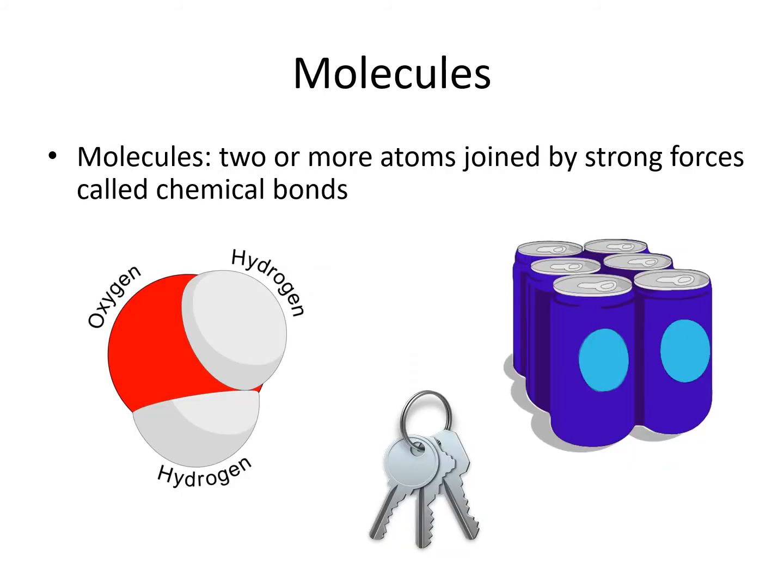Atoms can combine together to make molecules. When they combine together, they are connected by chemical bonds. These bonds are like a keyring holding keys together, or the plastic holding a six-pack together.